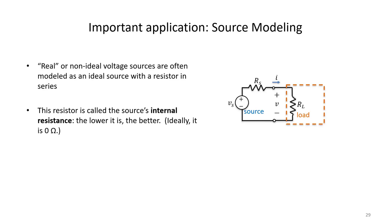One other thing that comes up with maximum power transfer and equivalent circuits is source modeling. Often we model real, non-ideal sources using a voltage source with a resistor in series. The resistance of that series resistor gets a special name called the internal resistance. Most of the time when you're working with voltage sources, you want the internal resistance of your source to be as low as possible — ideally zero ohms, but usually there will be some very small amount of resistance in your voltage source.